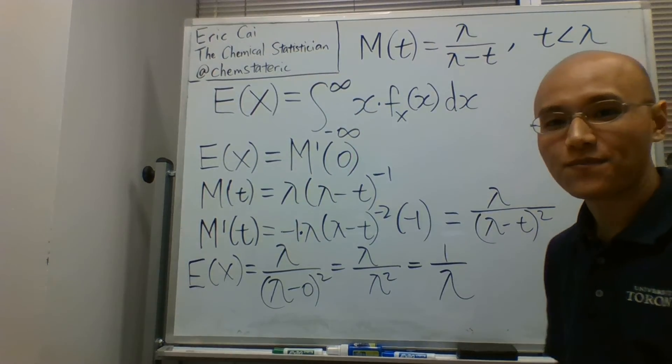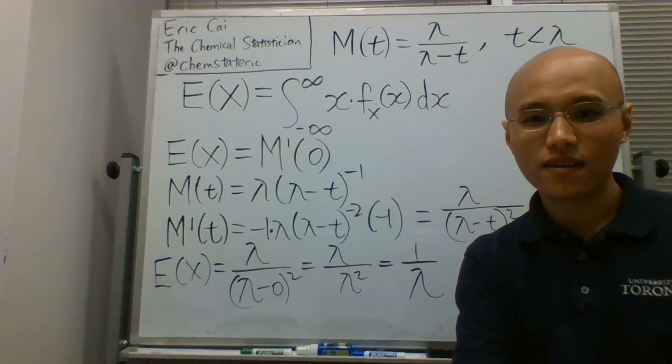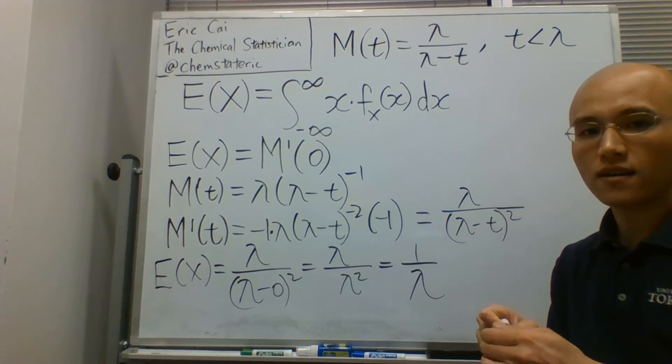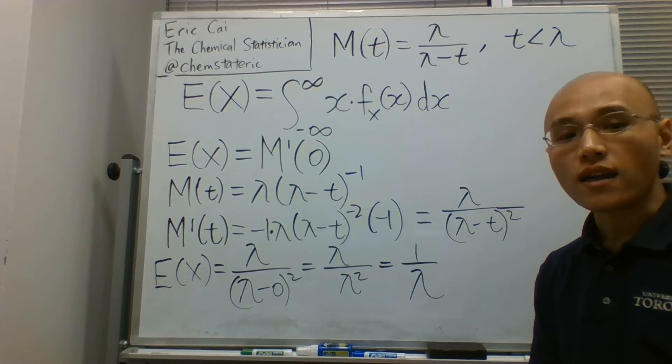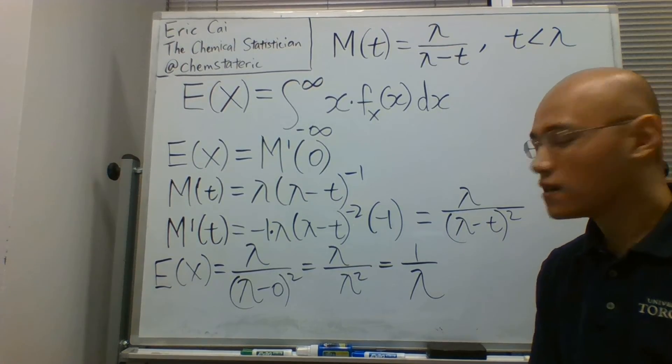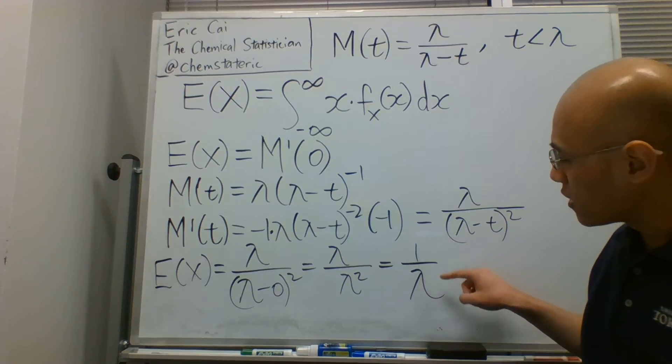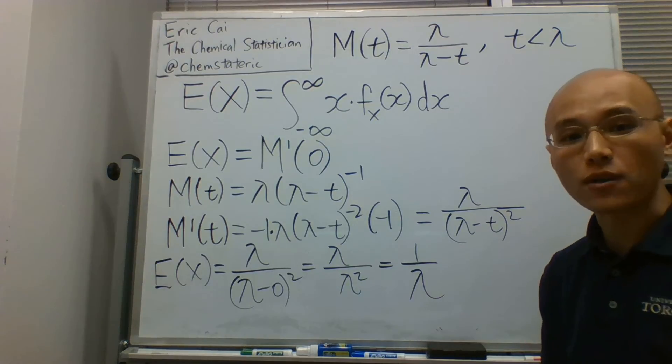And there you have it. The expected value for an exponential random variable is equal to one over the rate parameter, lambda.